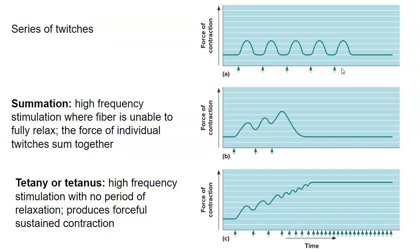But if we increase the frequency of the stimuli, look what happens. We have stimulation, we have the period of contraction, and then it begins to relax, but it doesn't fully relax, and we stimulate it again. So it contracts again, only relaxes partially, and it's stimulated again. So it seems as if these forces are summed together. That's what summation is — it's a response to high-frequency stimuli where the muscle fiber can't fully relax.